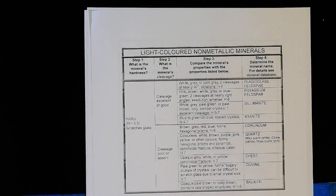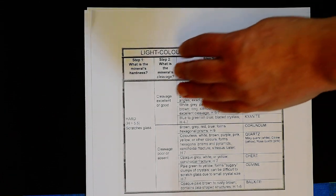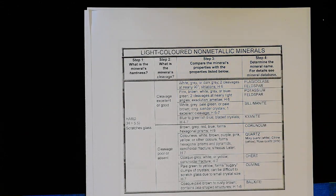When working on your lab using the mineral photos provided, hardness will be given to you. If a mineral has a colored streak, that information will also be provided. Work carefully through the flow charts, paying attention to cleavage and crystal form, and take your time. You can always contact the instructor if you need help.